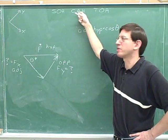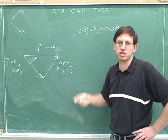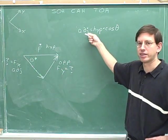Cosine equals adjacent divided by hypotenuse. And if you cross multiply, you'll get this equation.